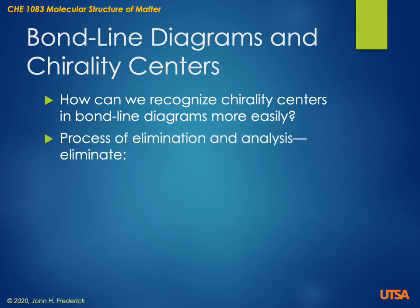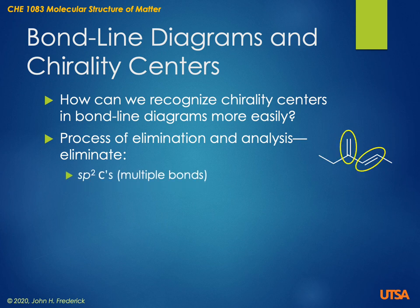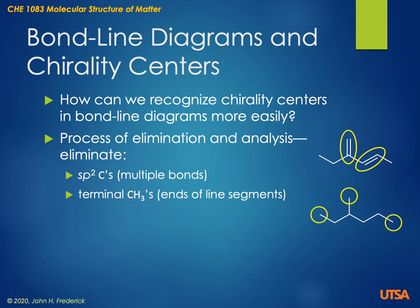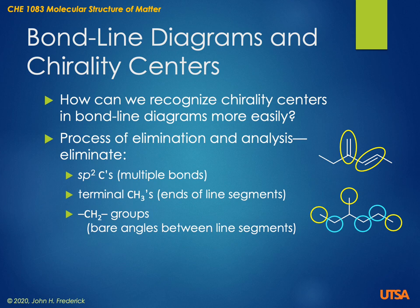We're going to do this by process of elimination and then analysis. We will eliminate sp2, or multiple bonded carbons, as we are here. We can also eliminate any terminal methyl groups, as we are in this diagram. We can eliminate any CH2 groups, so this bent angle in a bond line diagram can also be eliminated. You can see that we've eliminated most of the carbons in this bond line diagram. All we have to do is analyze what is left.